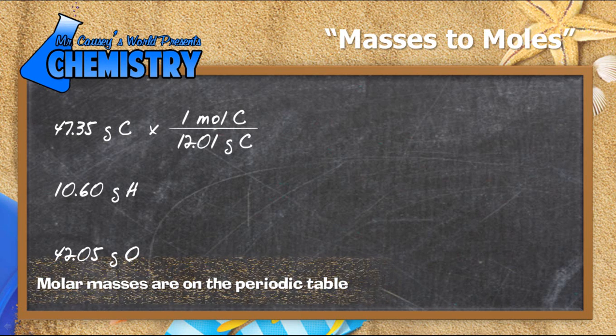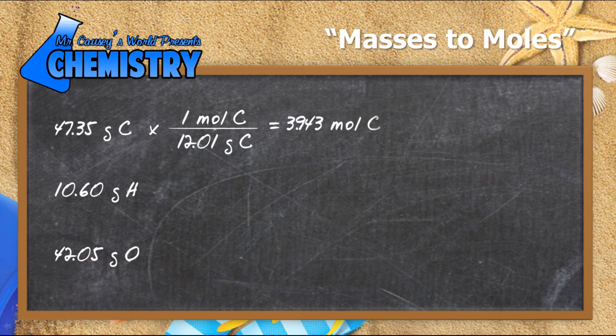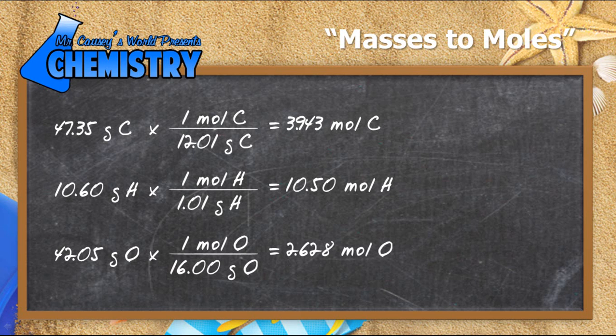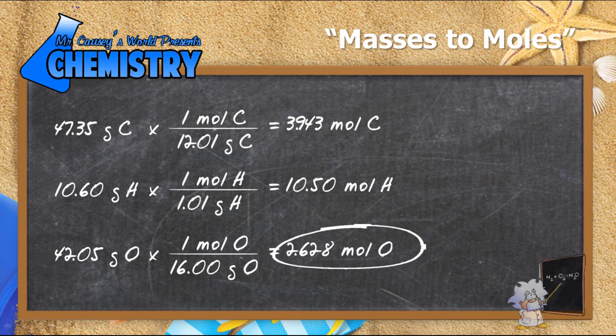So we have 3.943 moles of carbon and 10.50 moles of hydrogen and 2.628 moles of oxygen. Now let's go ahead and pick out the smallest value there and that's what we're going to do. We're going to build our ratios off it. We're going to take each one of these values and divide it by the moles of oxygen.